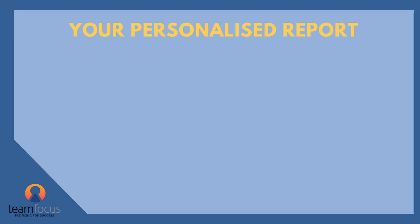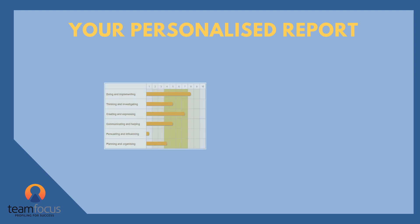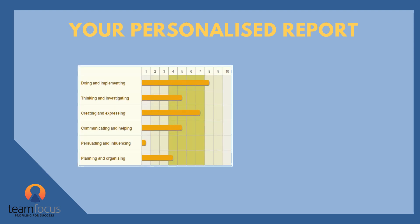That may seem like a lot of work, but it means that you can get a comprehensive report. This will either be available to you immediately, or you may get it from the person who asked you to complete the CII. Either way, the report shows you which of the six themes is likely to be of most interest to you — here suggesting doing and implementing — and also which is least likely to be interesting, here suggesting persuading and influencing.